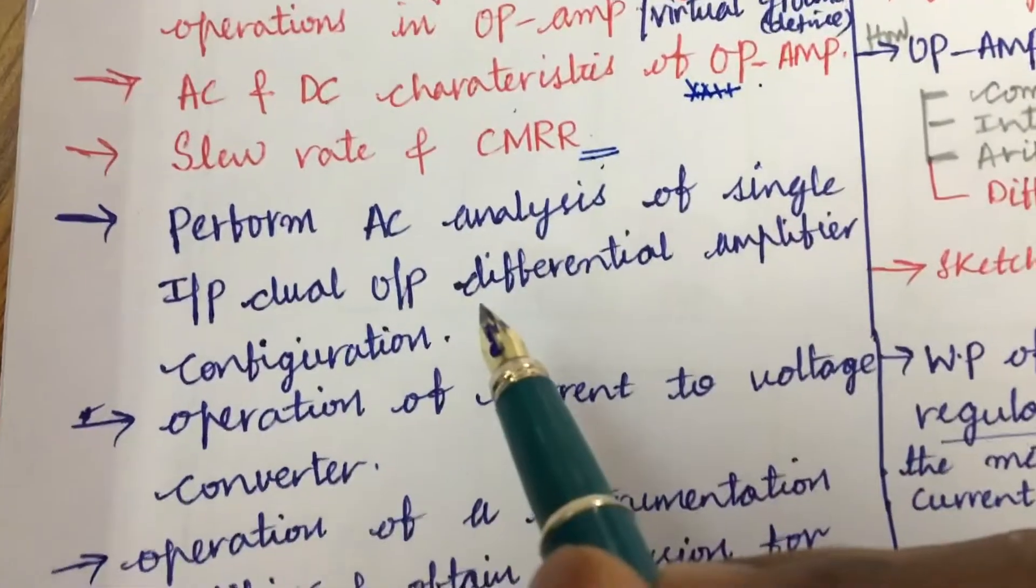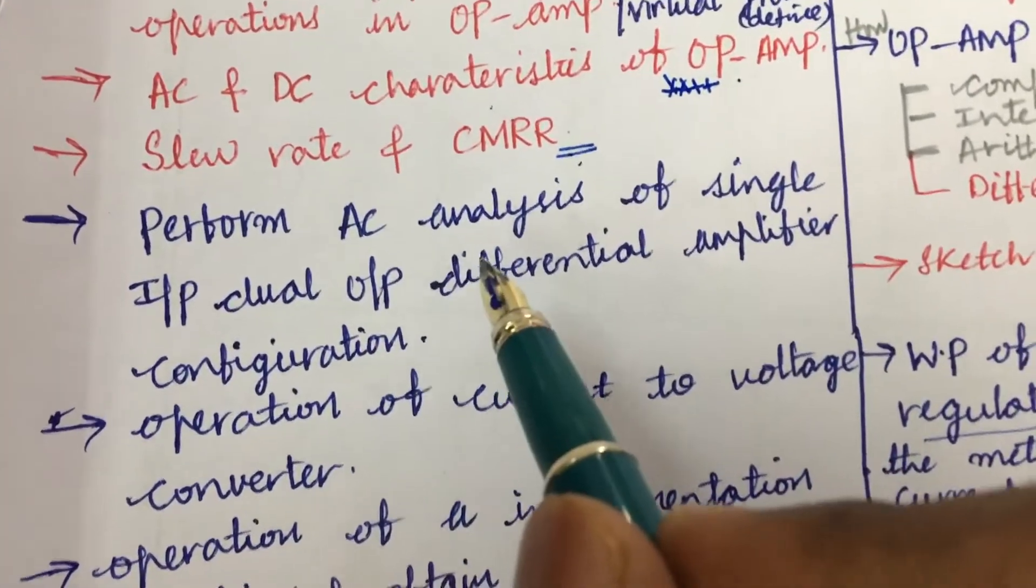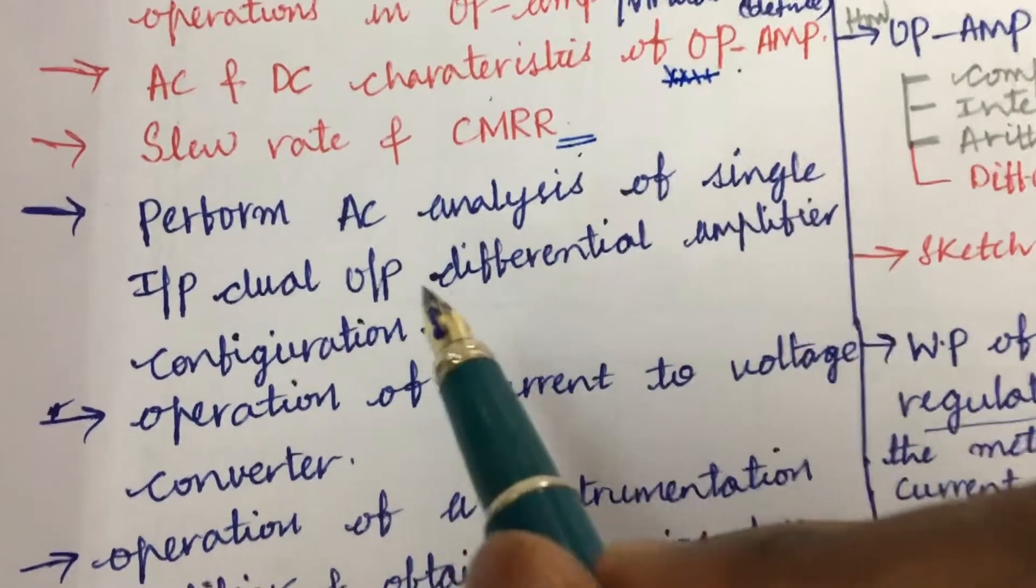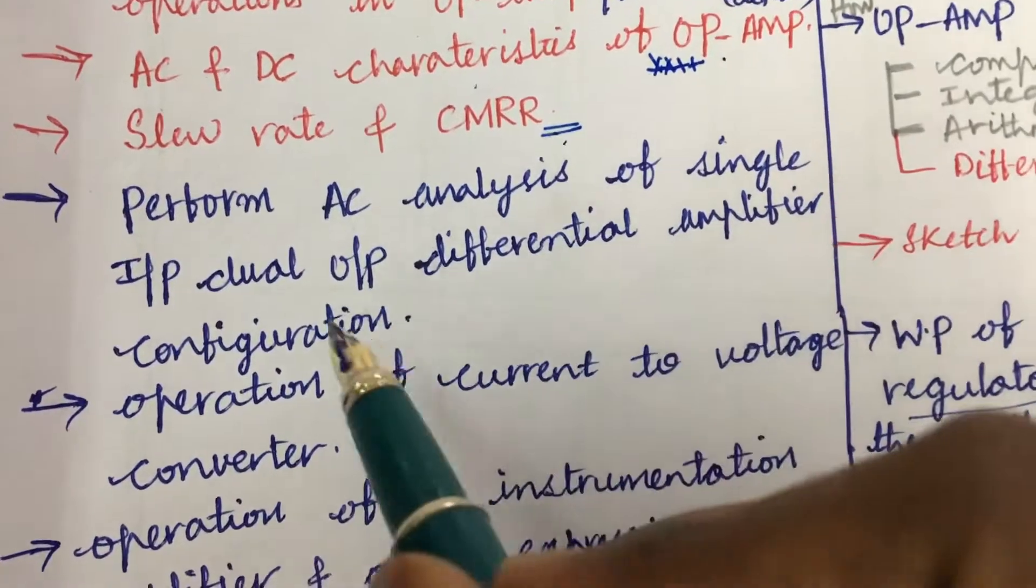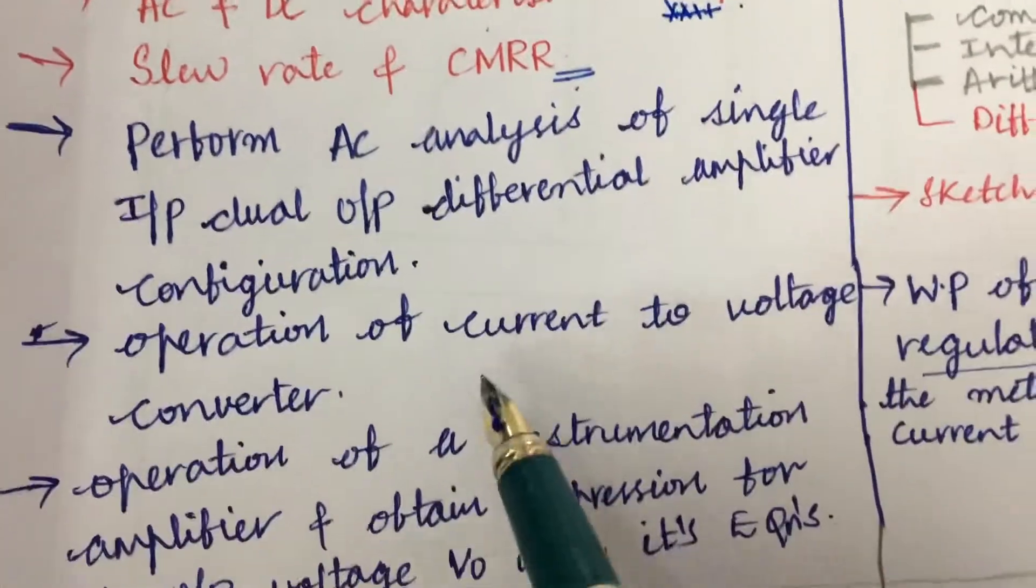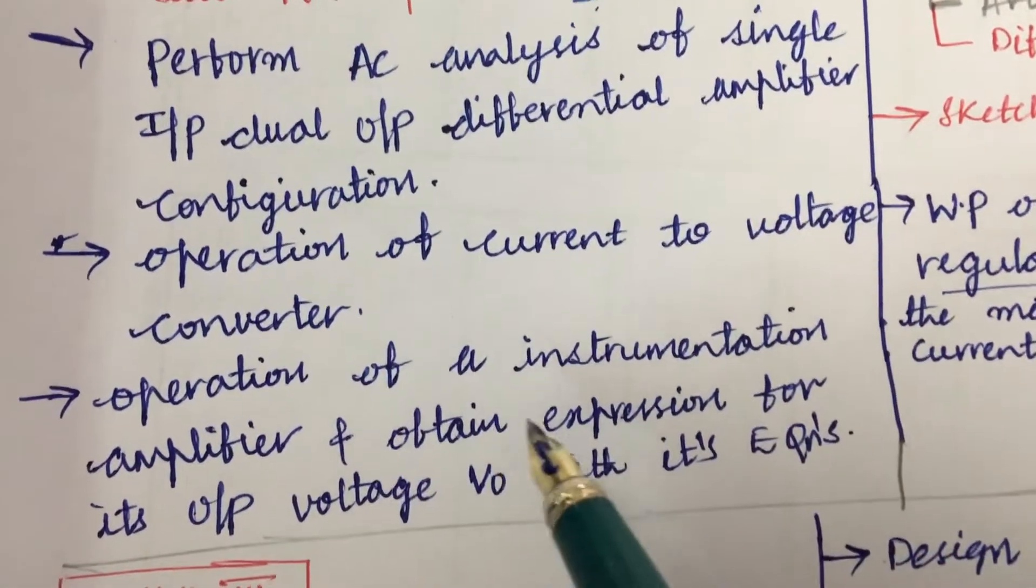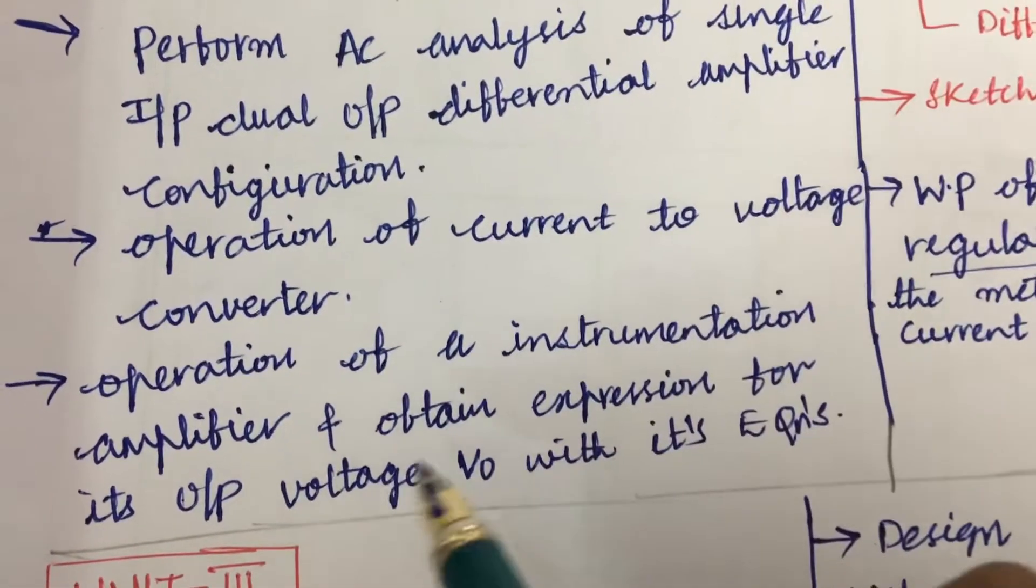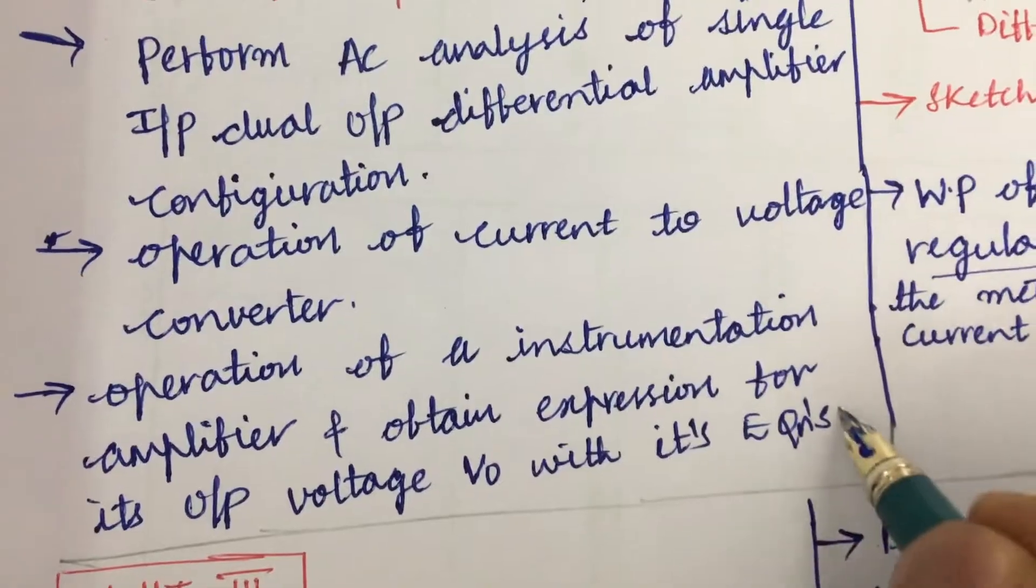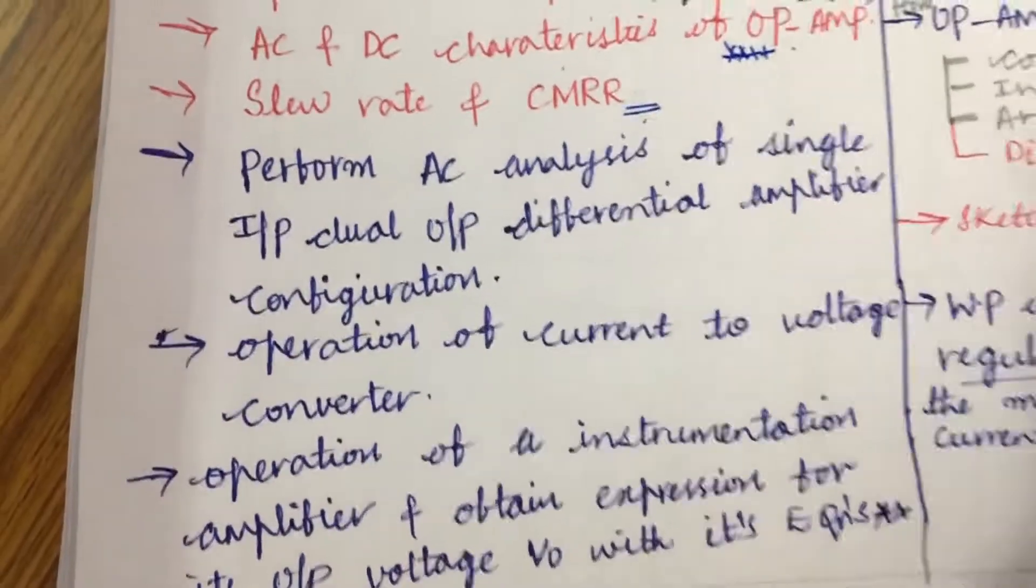Later, performance analysis. Perform an AC analysis of a single input, dual output differential amplifier configuration, operation of current to voltage converter, and operation of instrumentation amplifier and obtain expression for its output voltage with its equation is also one of the very important and gunshot questions.